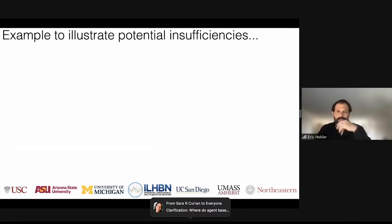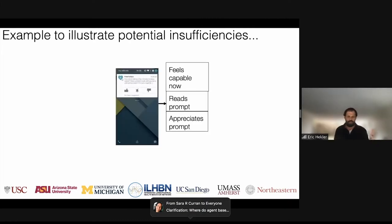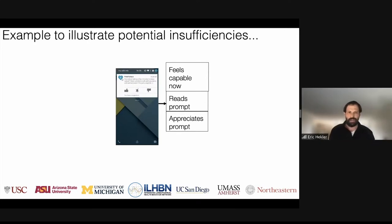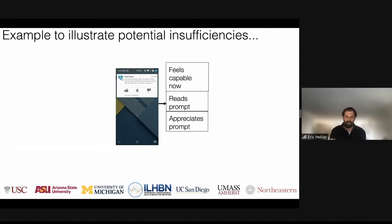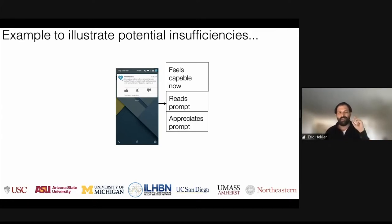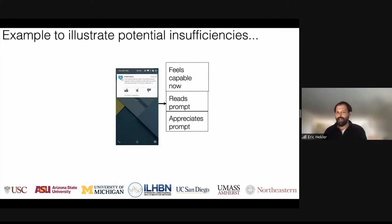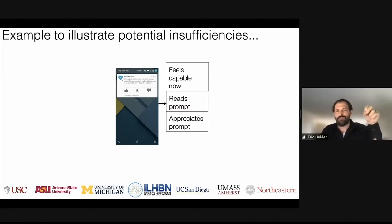This becomes more obvious when we think about JITAIs — just-in-time adaptive interventions. From an NIH R01, the general idea is we're sending little cues to action — context cues — to nudge someone to go for a walk. For example: "How about taking a few minutes to enjoy nature?" We send these multiple times throughout the day, and using a micro-randomization trial, we study if those notifications have an impact in different contexts.